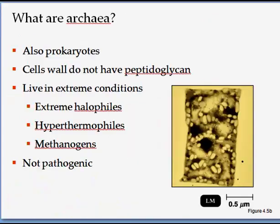What are archaea? Archaea are also prokaryotes — they do not have a membrane-bound nucleus or any organelles. The most important thing is they do not have peptidoglycan in their cell walls; they have other chemicals present in their cell walls. The most important thing to remember is that archaea are present in extreme conditions.